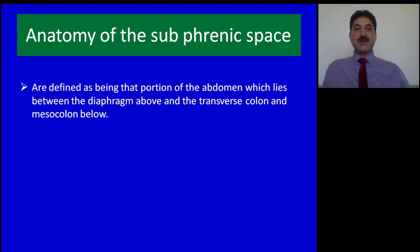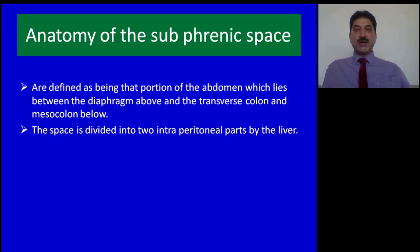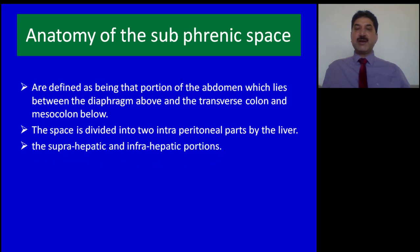Anatomy of subphrenic spaces. Subphrenic spaces are defined as that portion of the abdomen which lies between the thoracoabdominal diaphragm above and the transverse colon and mesocolon below. This is in fact the supracolic compartment, which is further divided into two intraperitoneal parts by the liver: the suprahepatic and infrahepatic portions.